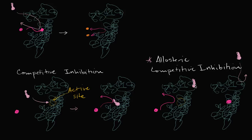They bind at an allosteric site, but it's the same idea. If the inhibitor gets to the allosteric site before the substrate gets to the active site, then the conformation of the protein changes so that the active site changes a little bit, and the actual intended substrate isn't able to bind. If the intended substrate binds first, then that changes the conformation a little bit at the allosteric site, and the inhibitor isn't able to bind.